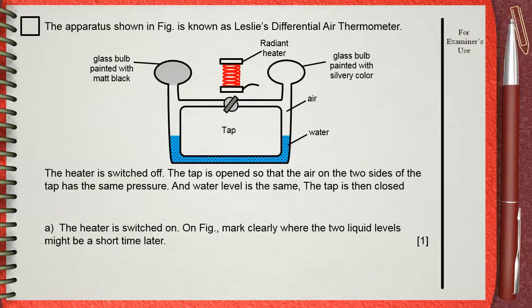The apparatus shown in the figure is known as Leslie's differential air thermometer. The heater is switched off, the tap is opened so that the air on the two sides of the tap has the same pressure and water level is the same. The tap is then closed.